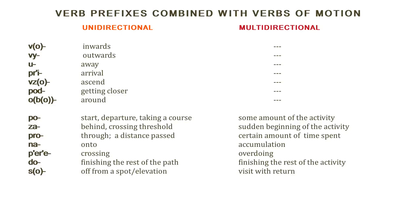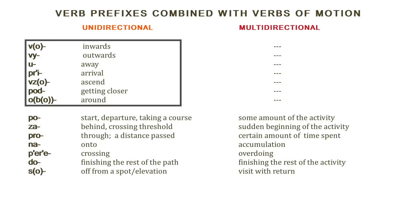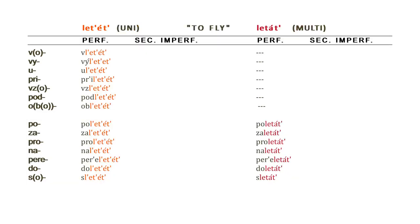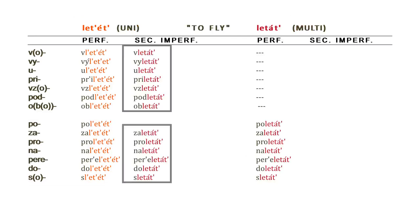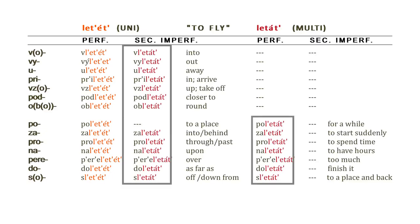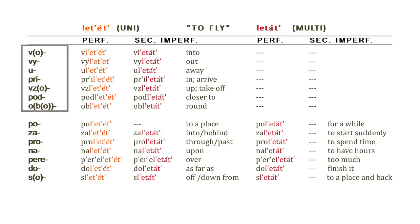Now let us turn to prefixed verb forms and consider the function of individual prefixes, using verbs of motion as a starting point, as they combine with almost the entire range of prefixes. There is a certain distinction: some prefixes denote purely spatial patterns of relocation — such as inwards, outwards or away — which in the case of motion verbs can be combined only with the unidirectional type. Other prefixes produce perfectives from both types of motion verbs with different final meanings. Perfectives with spatial meanings mostly do yield secondary imperfective forms, while those expressing temporal patterns usually do not.